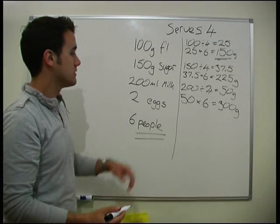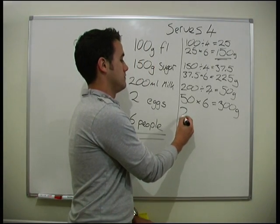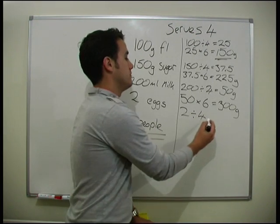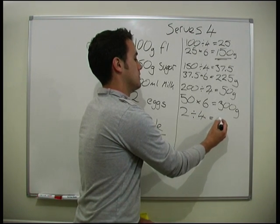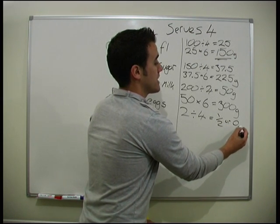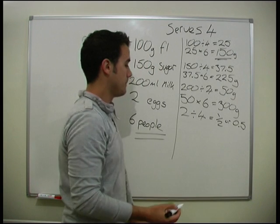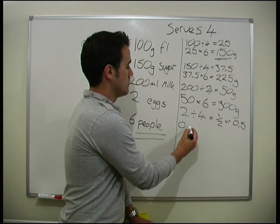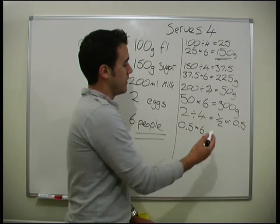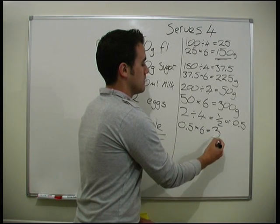And finally for the eggs, we've got 2 divided by 4, which equals a half, or we'll put 0.5 depending on whether you write as a fraction or as a decimal, and then we'll do 0.5 times 6, and we find out that we actually need 3 eggs.